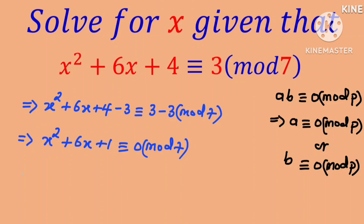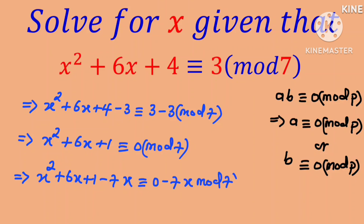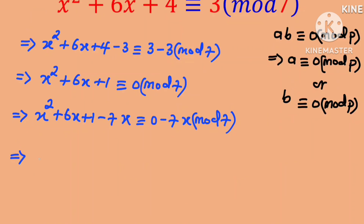we obtain x squared plus 6x plus 1 minus 7x, which is congruent to 0 minus 7x in mod 7. This implies that x squared minus x plus 1 is congruent to 0 in mod 7, since any multiple of 7 in mod 7 is 0 — that is, any multiple of 7 divided by 7 leaves a remainder of 0.